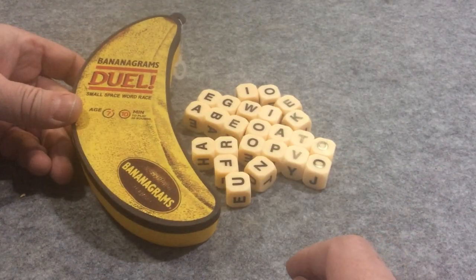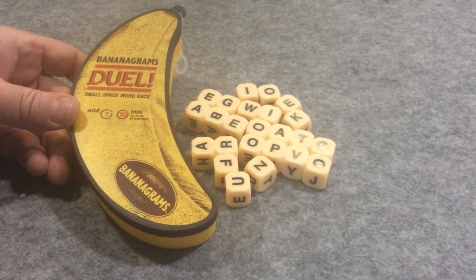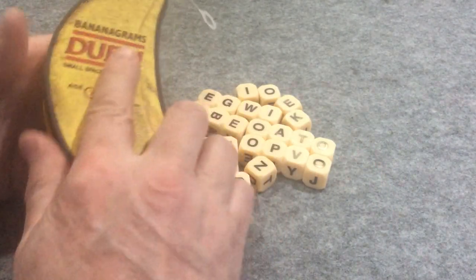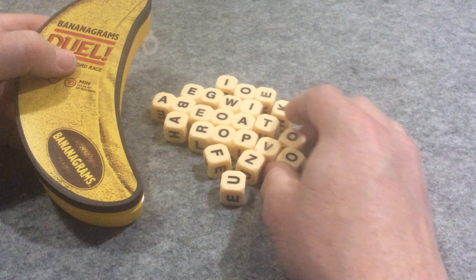So this is the box, or I guess box is a loose term, the container that you'll get with Bananagrams Duel. It's a plastic container that opens like that and keeps the dice inside. You're going to get 24 of these dice, or letter cubes I guess as they're called in the game.